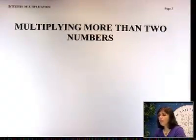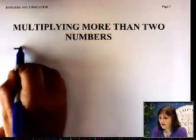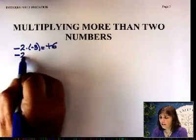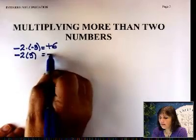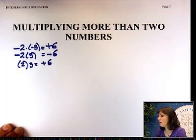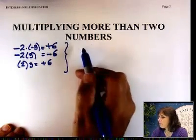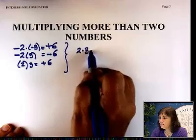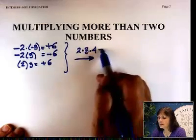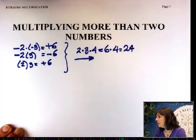Now let's look at multiplying more than two numbers. A double negative is positive, a negative and positive gives a negative, and two positives give a positive. The only time I get a negative is when I multiply a negative and a positive. Let's say three positive numbers: 2 times 3 times 4. You always multiply from left to right — 2 times 3 is 6 times 4, that's 24. Three positive numbers give a positive number.